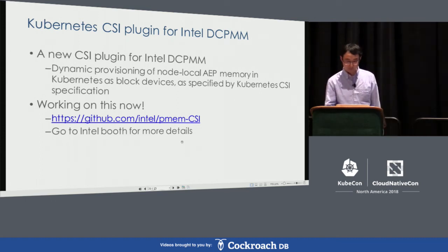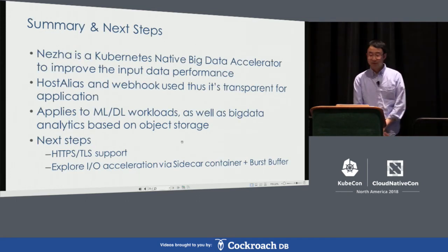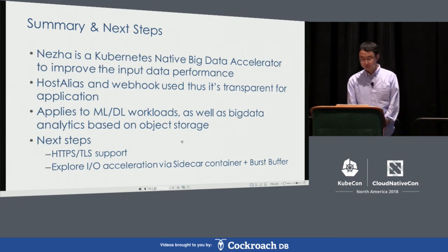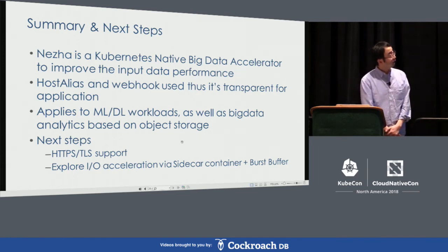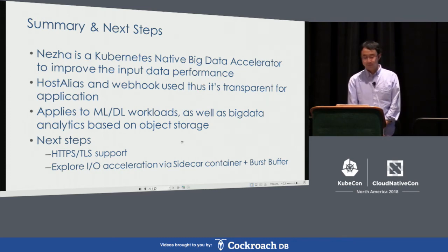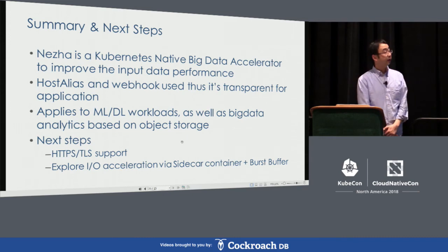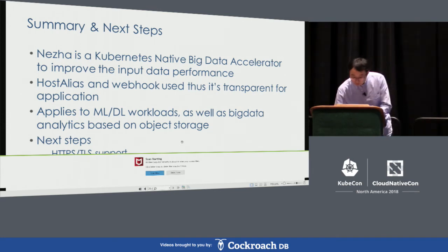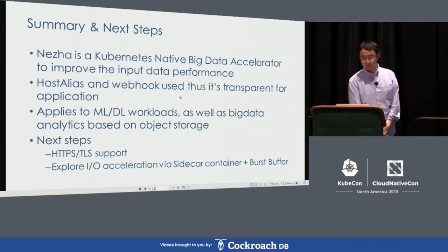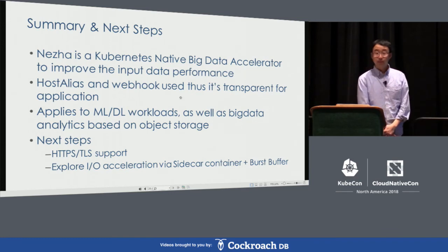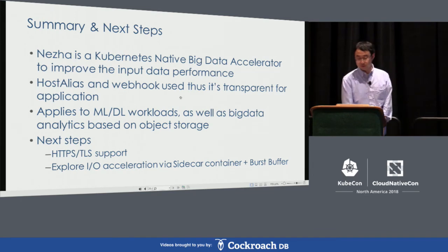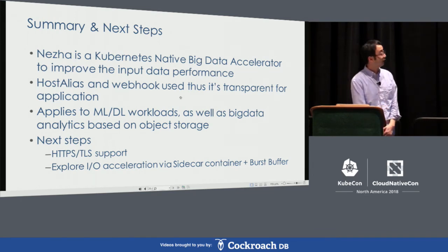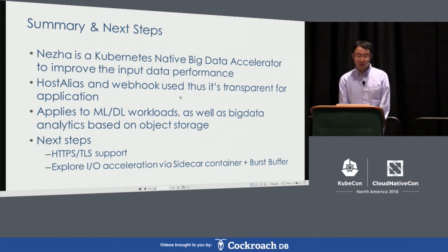In summary, Nezha is a Kubernetes-native big data accelerator project that can improve your input data performance. We use host alias and webhook, which is transparent for applications — you don't have to change any code. This can be applied to machine learning and deep learning workloads as well as big data analytics based on object storage. In our basic tests, we found performance improvement can be 30% to 40% depending on the input data size. As next steps, we're going to work on HTTPS support as well as the sidecar container solution.